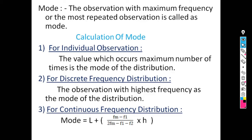For individual observation, the value which occurs the maximum number of times is the mode of the distribution. For discrete frequency distribution, the observation with the highest frequency is the mode of the distribution — that is, if a single observation along with frequencies is given, then the mode is the observation with the highest frequency.